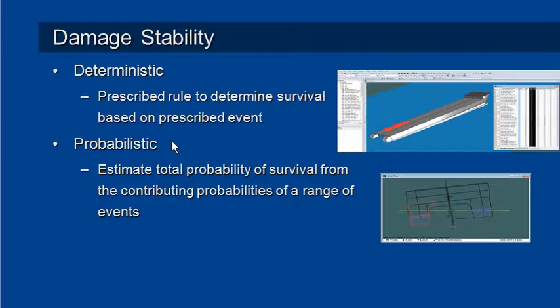The probabilistic approach is a bit different. What we do there is we estimate a total probability of survival from the contributing probabilities of a whole range of damage events. We basically look at a whole range of damage conditions, estimate the probability of each one, and then combine them all together to get a total probability of survival.